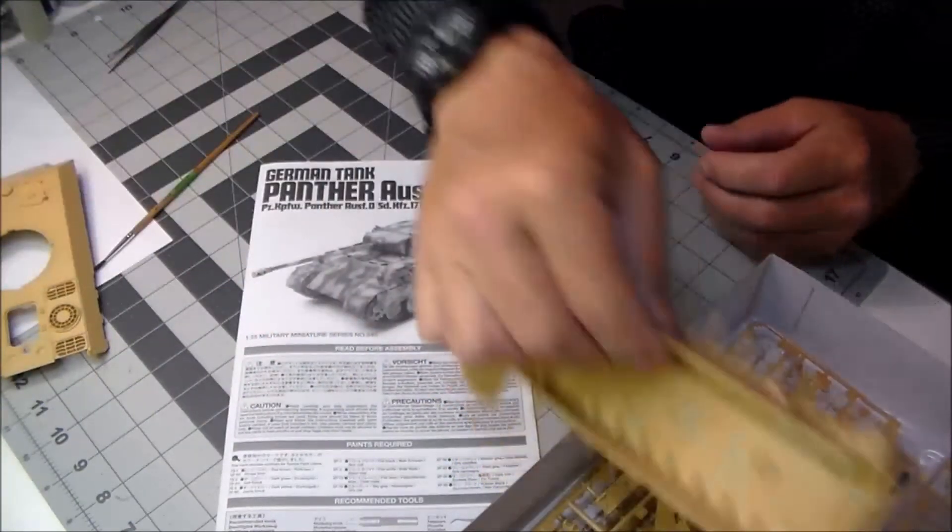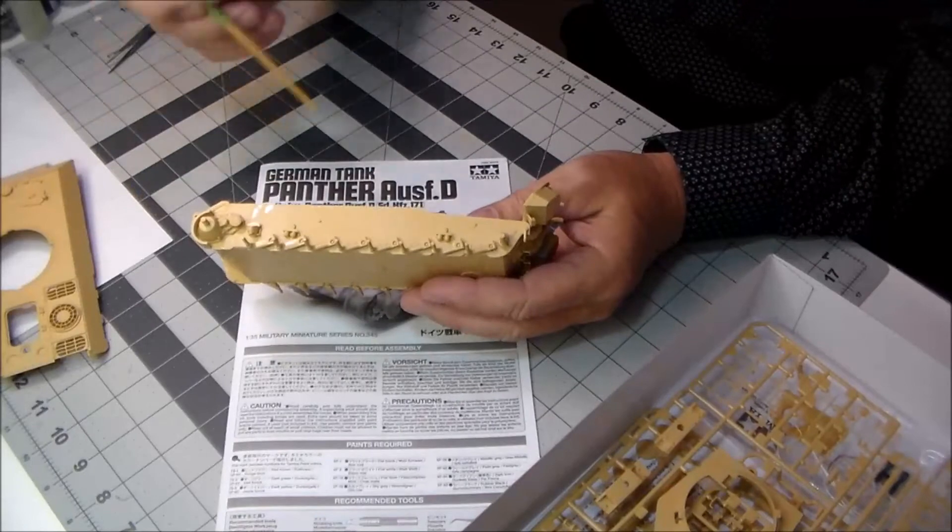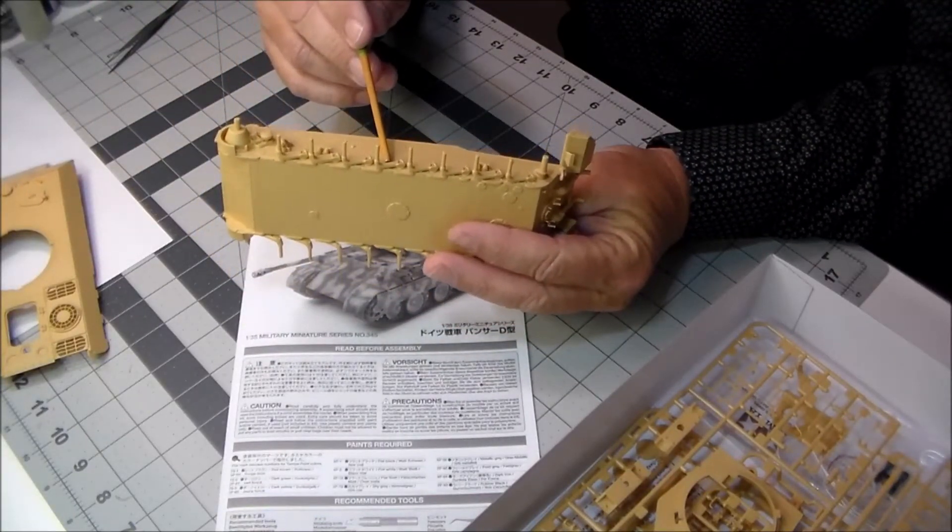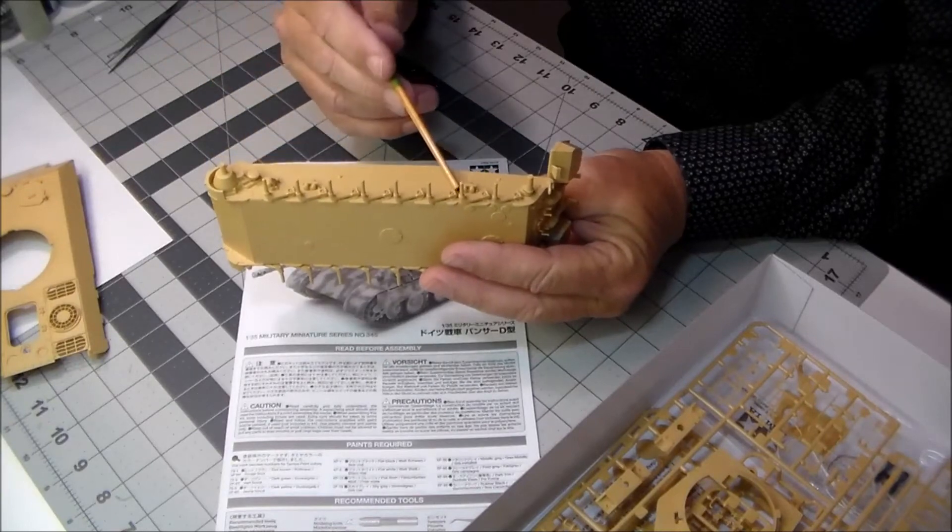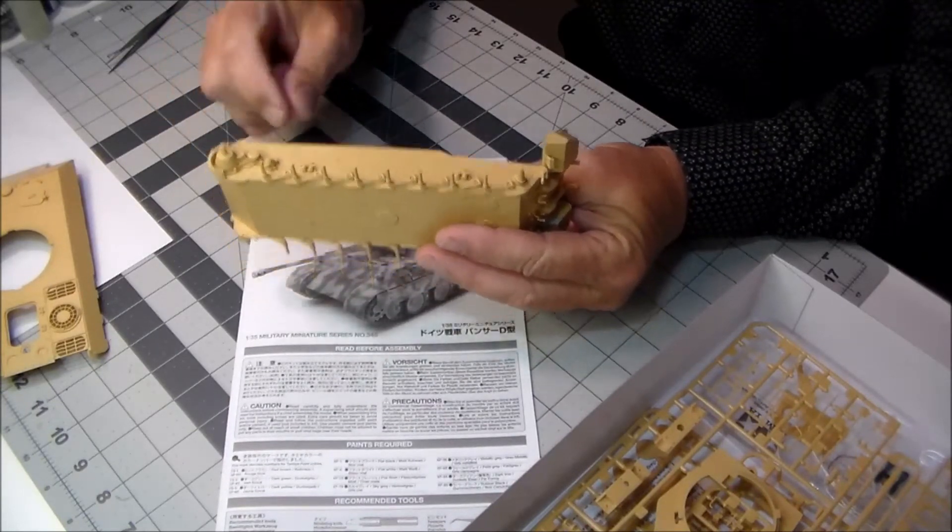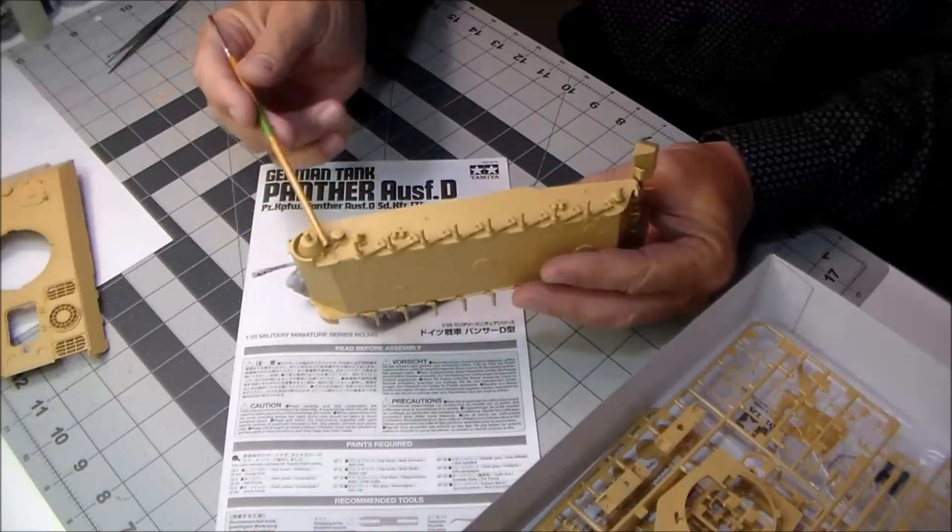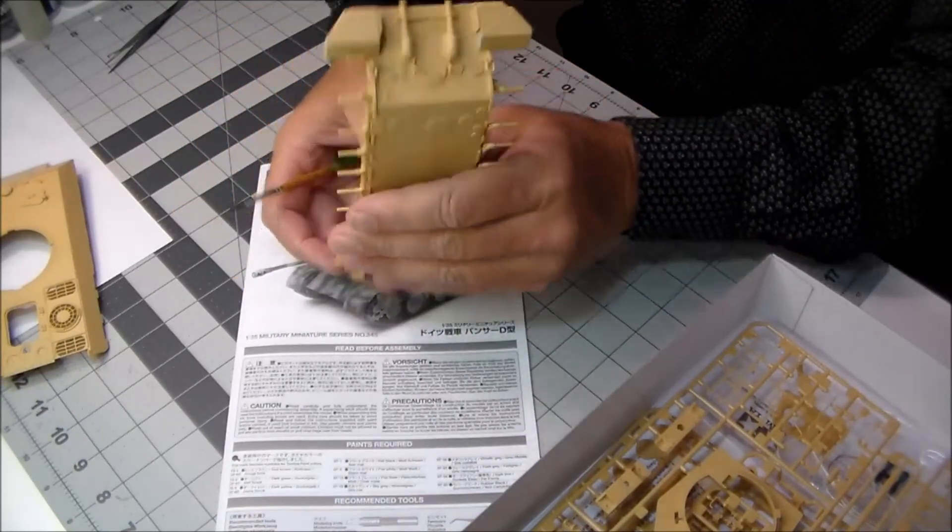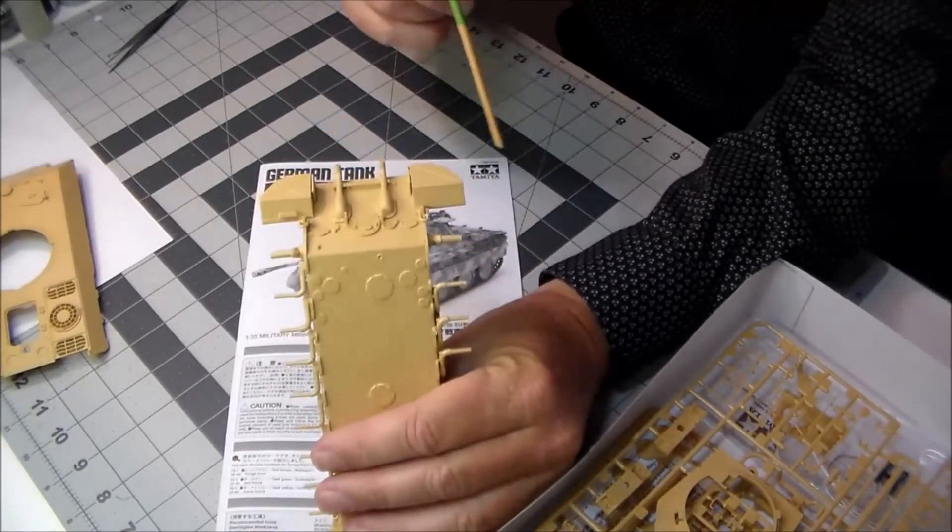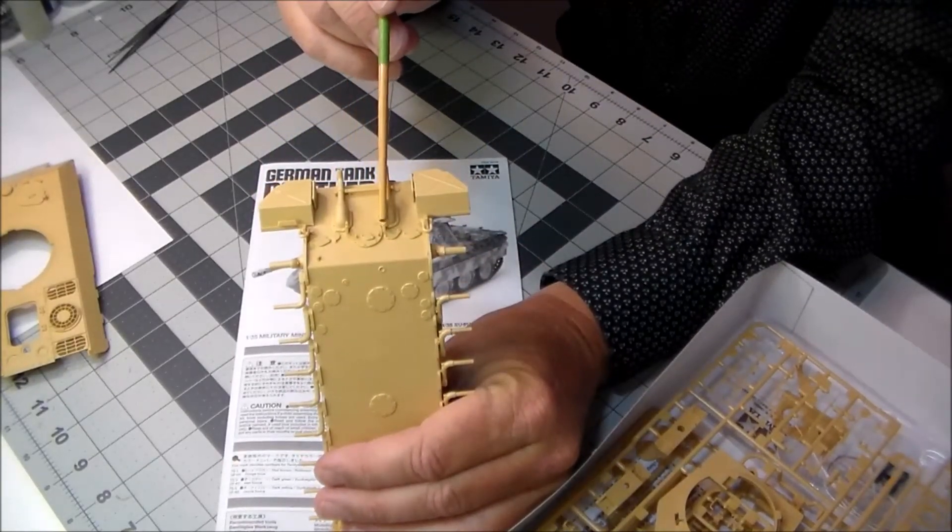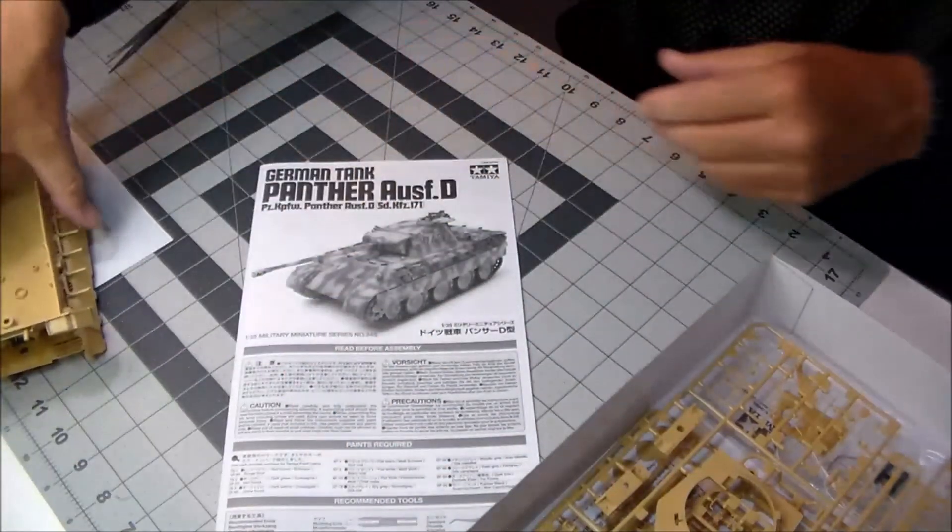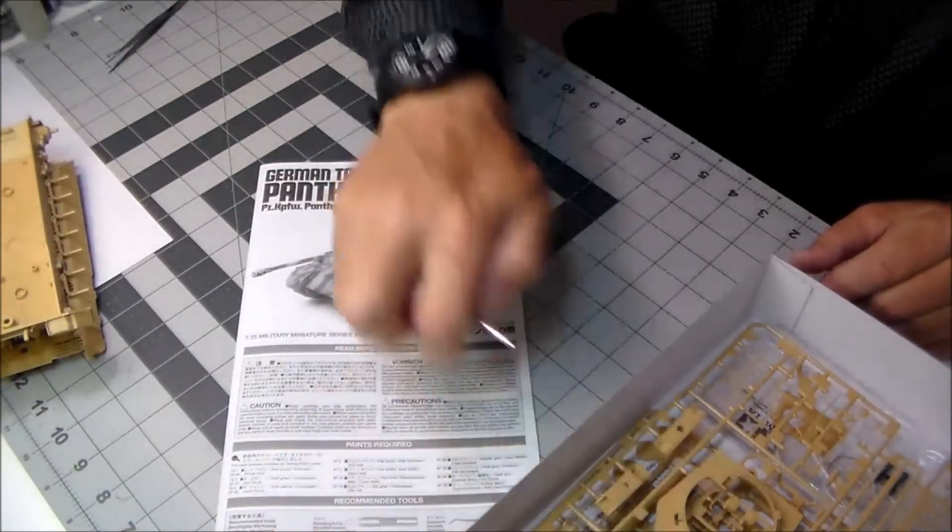The hatch retainers, I guess you'd call them, those have all been installed. So that's what's done on the upper hull. Lower hull - suspension. The suspension is really nice. I mean, it's good detail. You can't really see that once the wheels are on, but at least I know it's there. Final drives which are very nice, the rear plate.